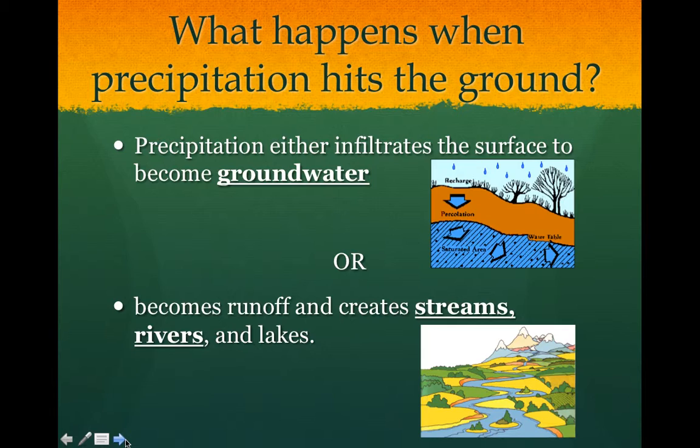So when precipitation hits the ground, whether it's rain, snow, sleet, or hail, it can do a couple of things. Sometimes it'll find its way and infiltrate the surface to become groundwater if the soil or the rocks or the particles are porous enough, so they have big enough spaces in between the particles. It'll find its way down into the ground and become groundwater, or it'll become runoff and create streams, rivers, and lakes if there's a lot of rain or if it's in an area where the ground is really hard and water can't get into the ground.